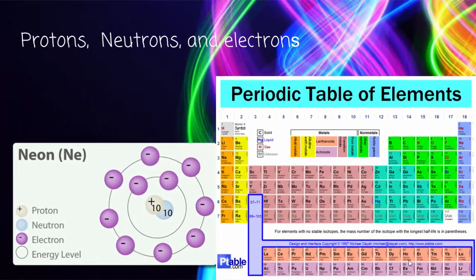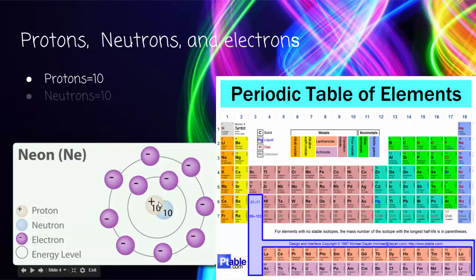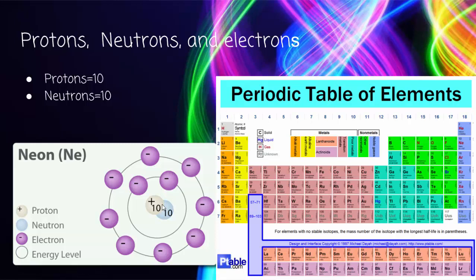Now for protons, neutrons, and electrons. The number of protons in NEON is 10. A proton is inside of NEON and has a positive charge. Neutrons is also 10 — a neutron is also inside of NEON, but unlike protons, it has no charge at all.